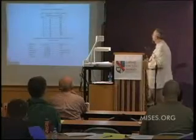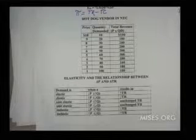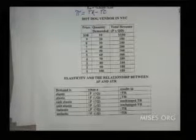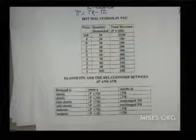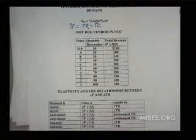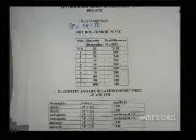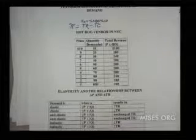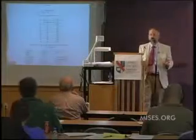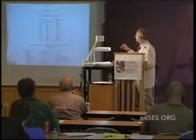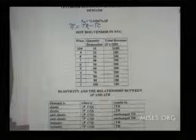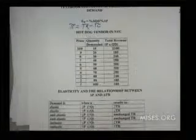This hot dog vendor, if he's profit motivated, would not charge a price below a certain point. Even at $5, he could do better. Profit — which I symbolize as pi, the Greek letter pi, because we use P for price — is equal to total revenue minus total cost. Even at $5, if he could raise the price to $6, his total revenue doesn't change. But his total cost goes down because he has to buy ten fewer hot dogs, so his profits go up. At any price below $5, raising the price increases total revenue and cuts back on total cost. So he will sell at a price of $6 or above.